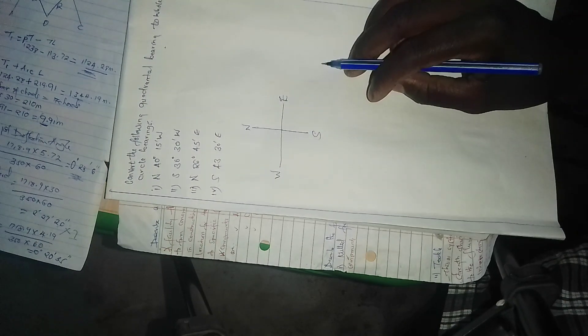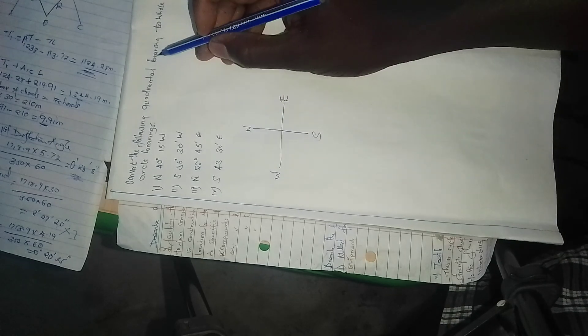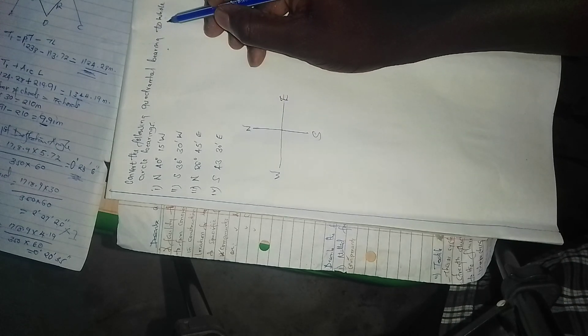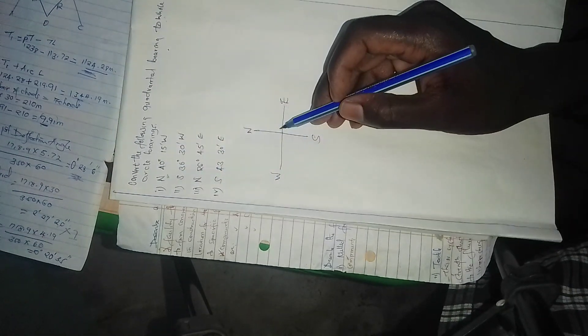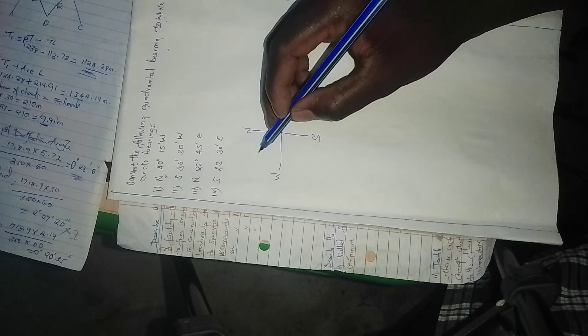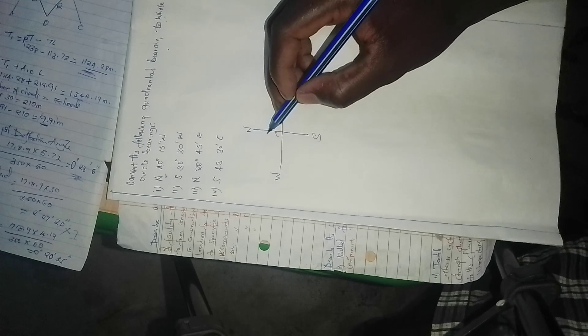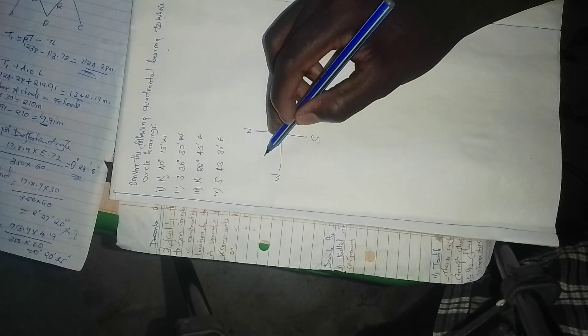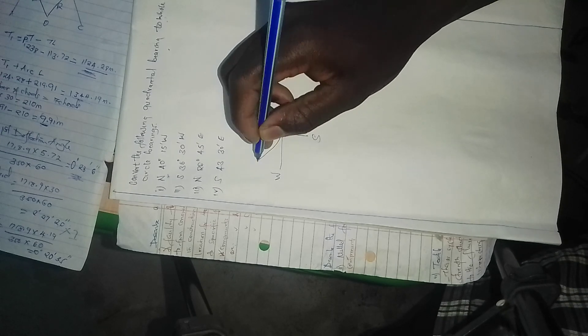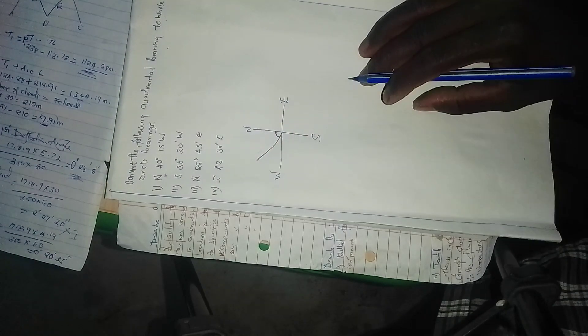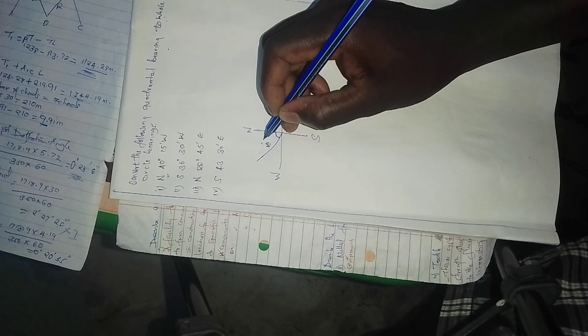This one says it is from north to west. The bearing starts from north going to west, so it will be somewhere here. This angle is 40 degrees 15 minutes from north to west.